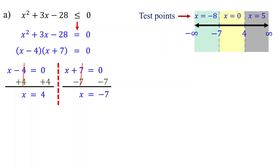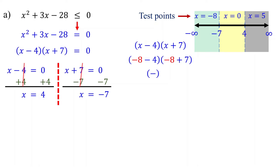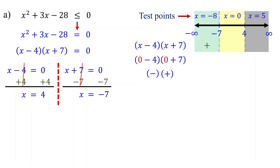Then, substitute these test points into the quadratic expression to determine whether it is positive or negative in each interval. Instead of using the original expression, we can use its factored form as it is easier to evaluate. For the first interval, substituting negative 8: negative 8 minus 4 results in a negative number, and negative 8 plus 7 also results in a negative number. The product of two negative numbers is positive. Therefore, the quadratic expression is positive in the first interval. For the second interval, substituting 0: 0 minus 4 gives us a negative number, but 0 plus 7 gives us a positive number. The product of a negative and a positive number is negative. Therefore, the quadratic expression is negative in the second interval.